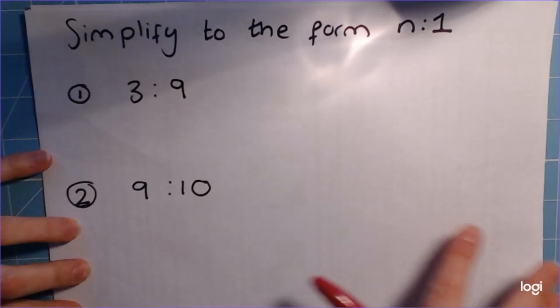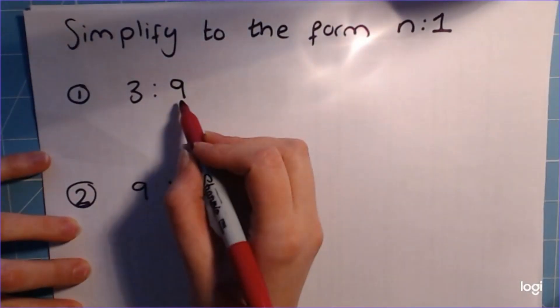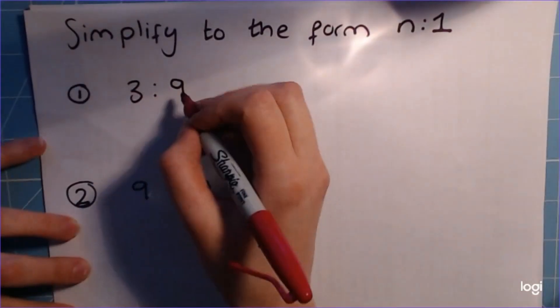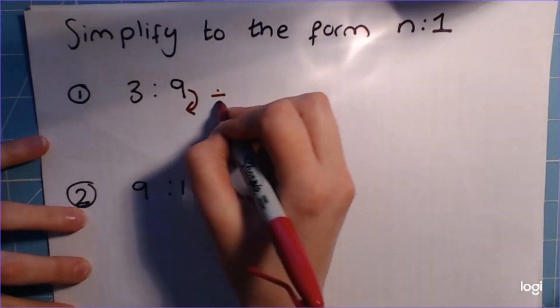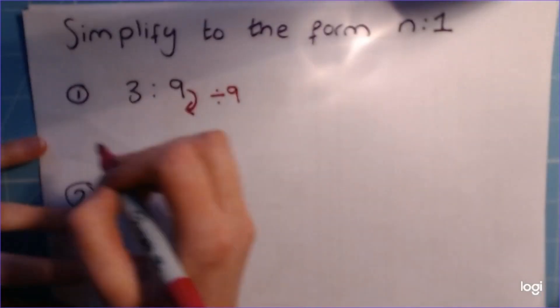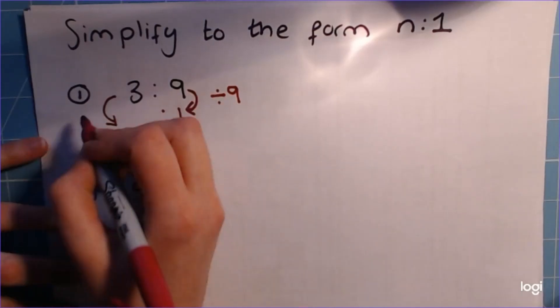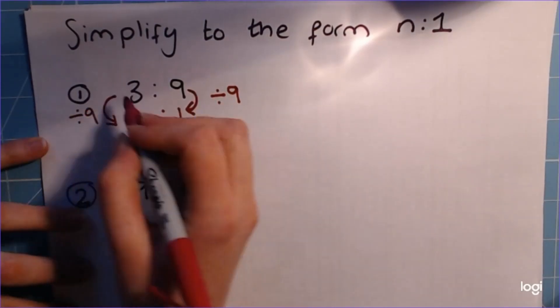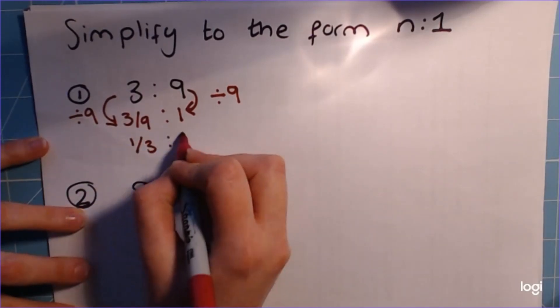So I'm hoping you can kind of see where we're going with this. It's the same thing, but this time we're looking for this number to become the 1. So this time we're going to divide by 9, because we want this number to become the 1. So that gives us the 1. And here we get 3 divided by 9, which is 3/9, simplifies to 1/3 to 1.